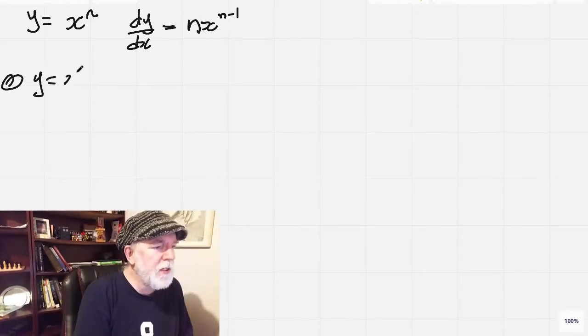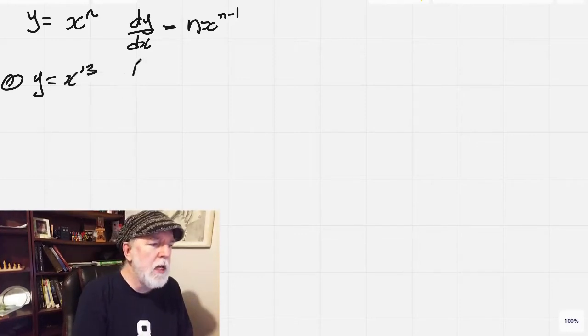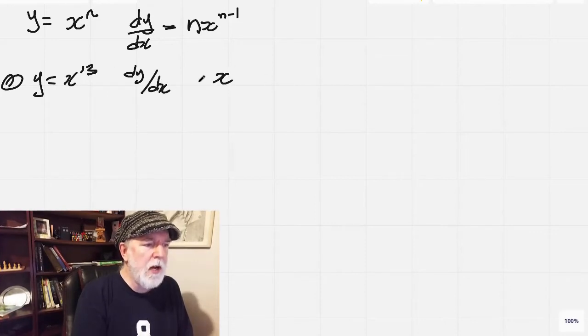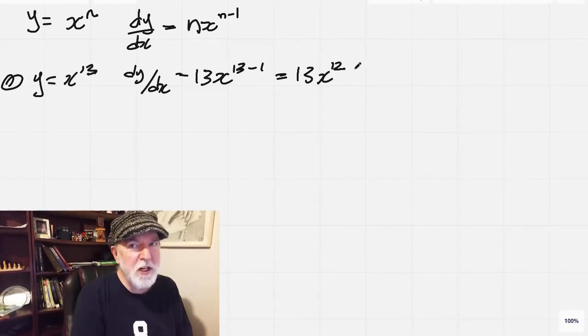y equals x to the 13th. Pretty straightforward. dy by dx. Keep our x there. That 13 comes to the front, and then it's 13 minus 1, which is 13x to the 12th.